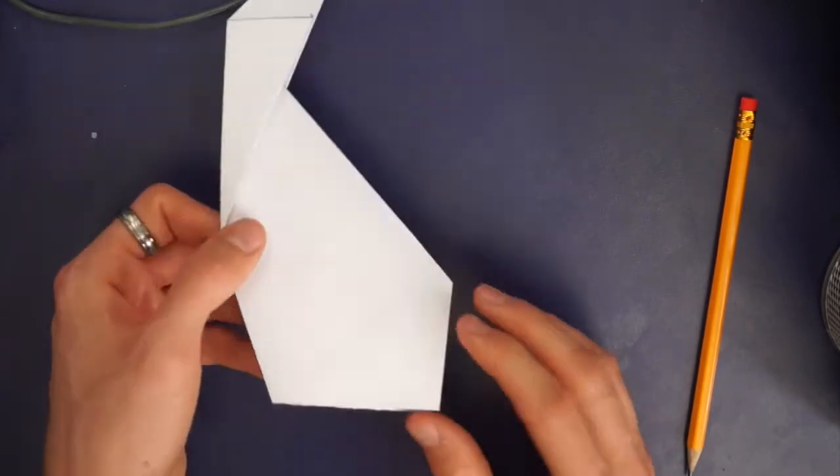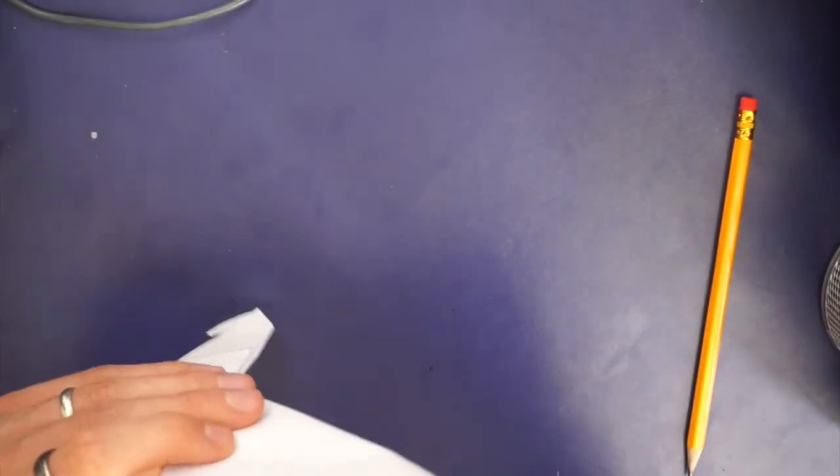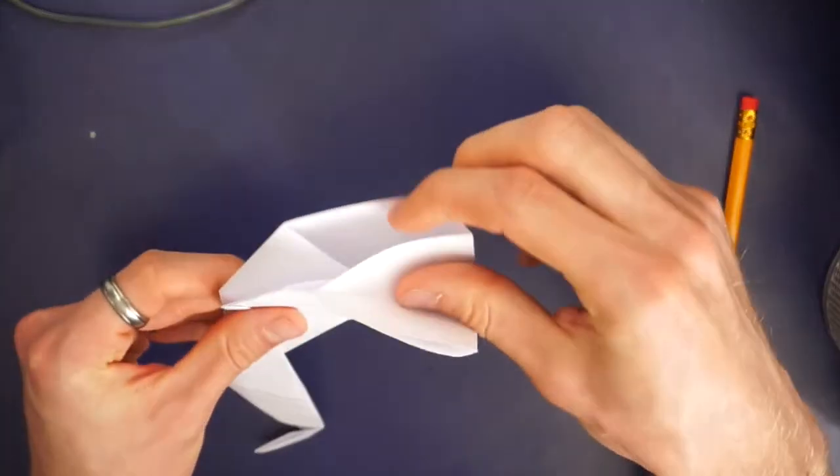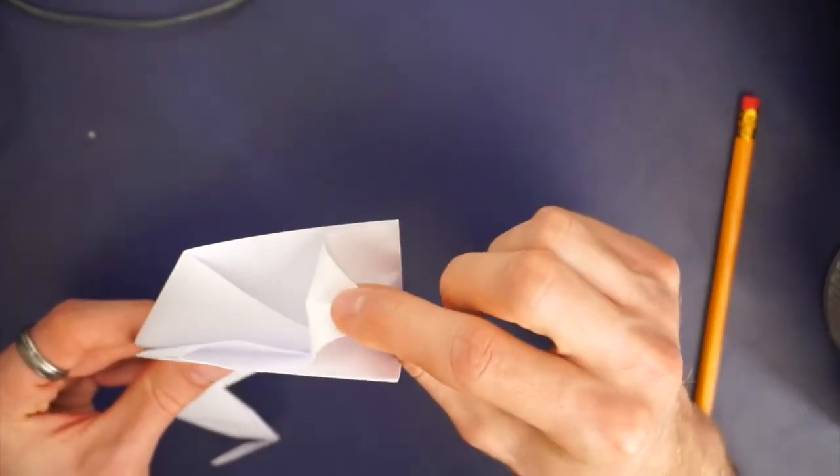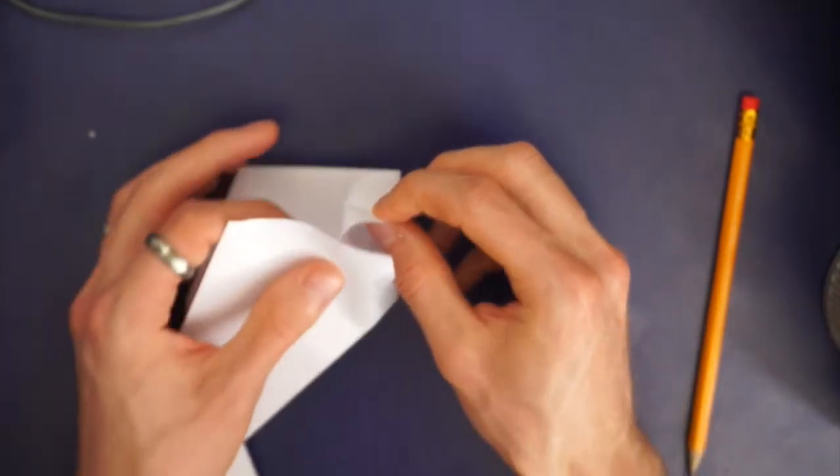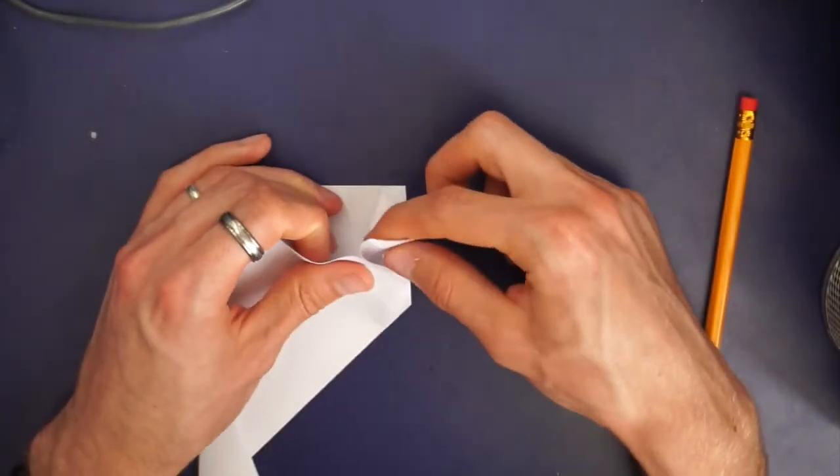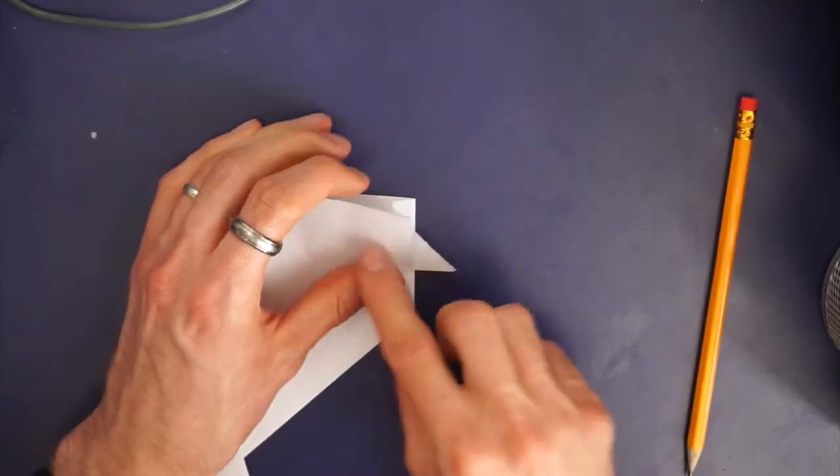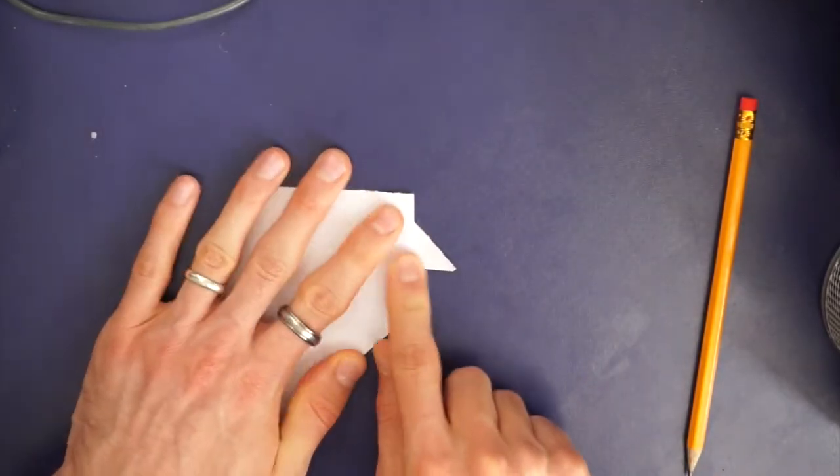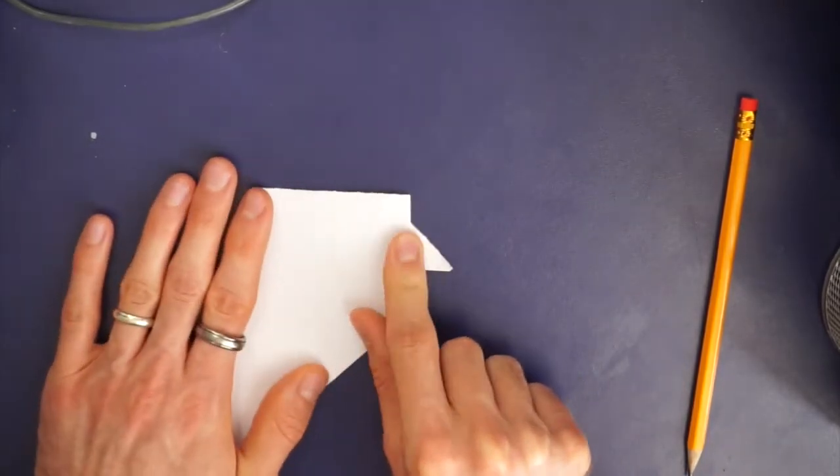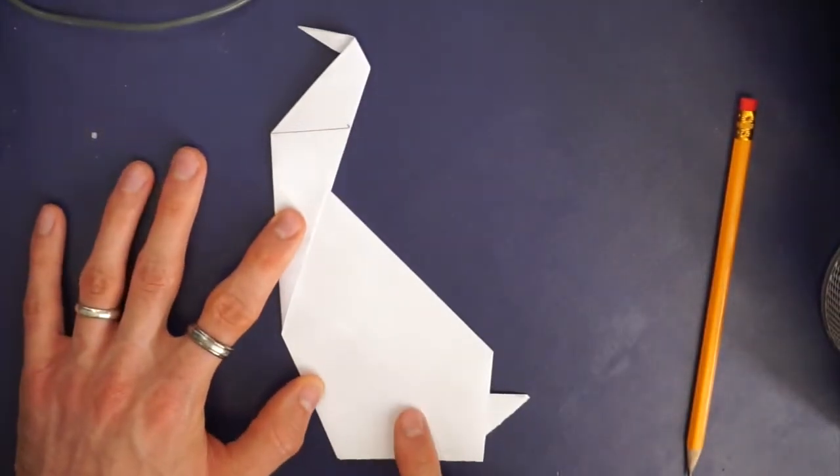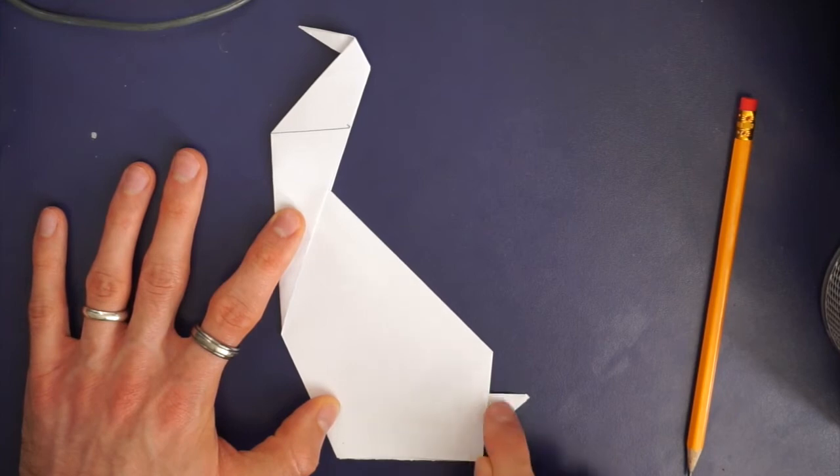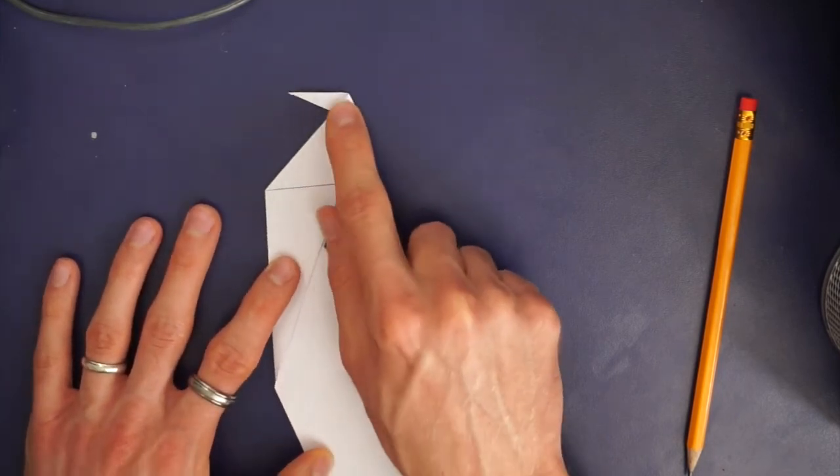When you've done that you should see that inside you've got that fold that you've just folded in and you're going to want to fold a little bit back out to just stick out for the tail. So have a look what that looks like. Just a little bit stuck out for the tail like that. So you should see that we've got quite a nice looking giraffe shape now with a little tail out here, the neck and the face.